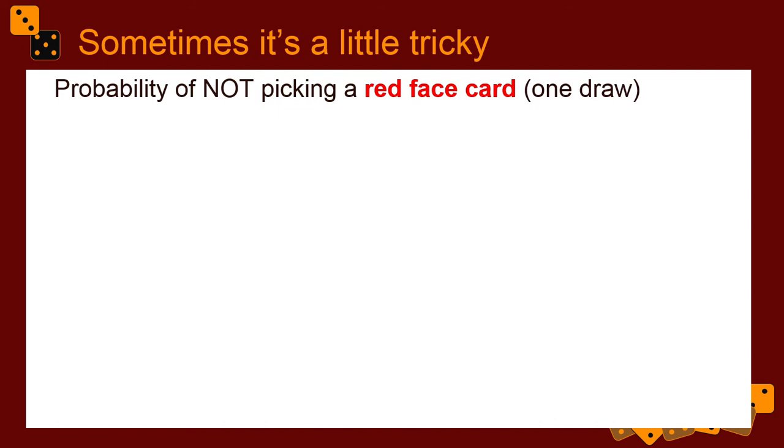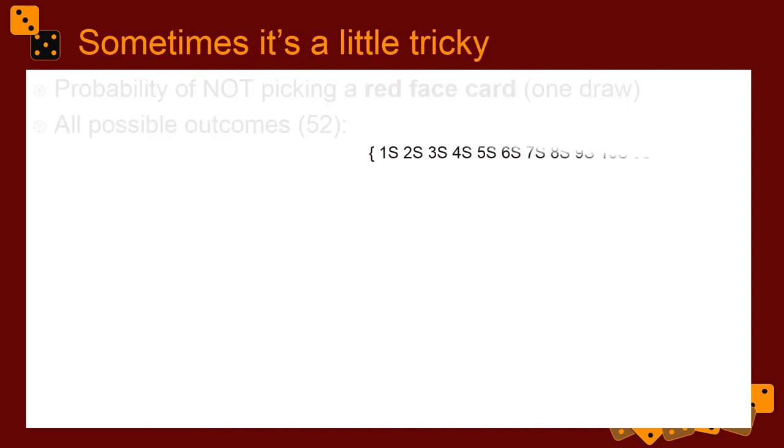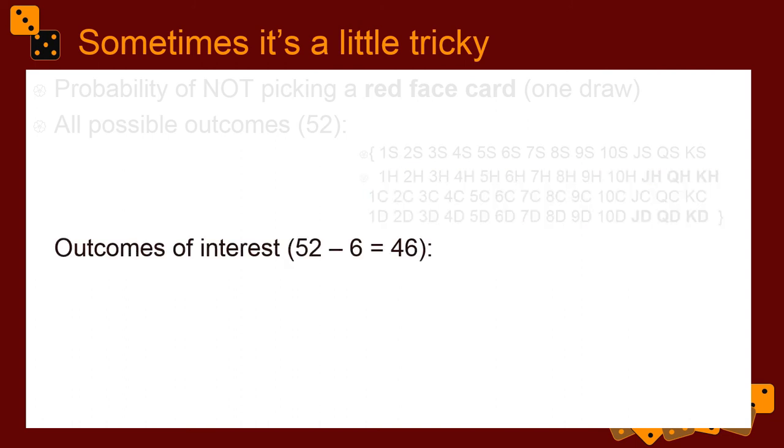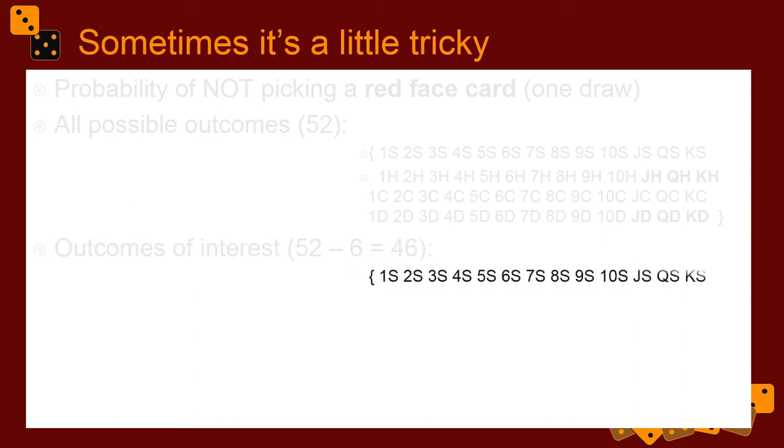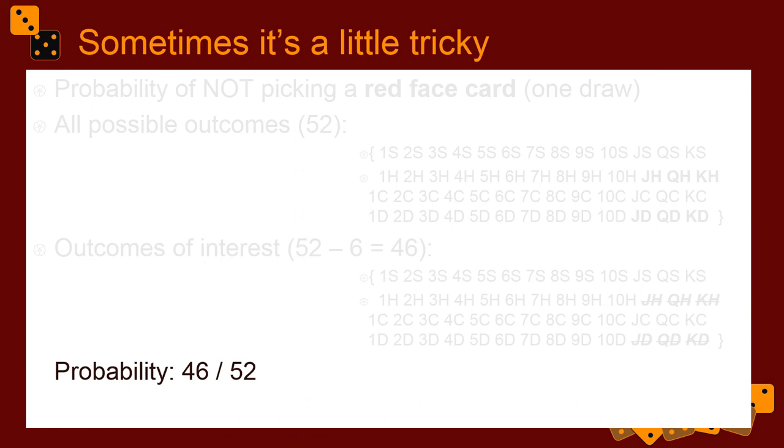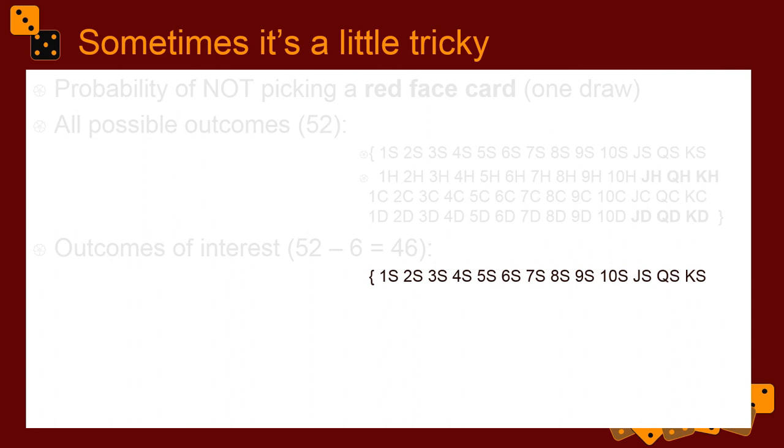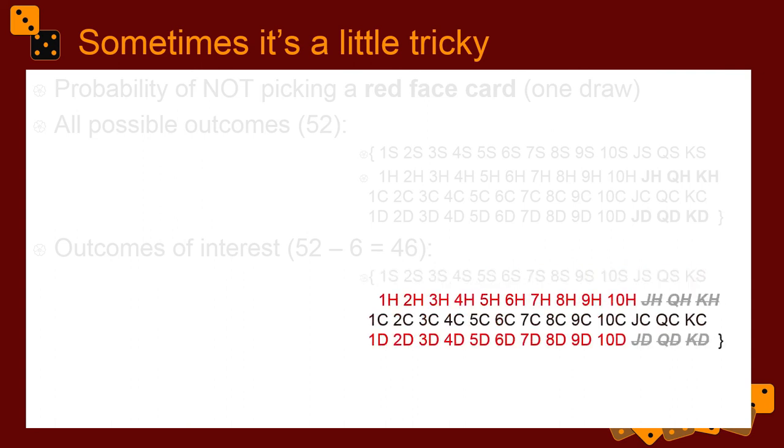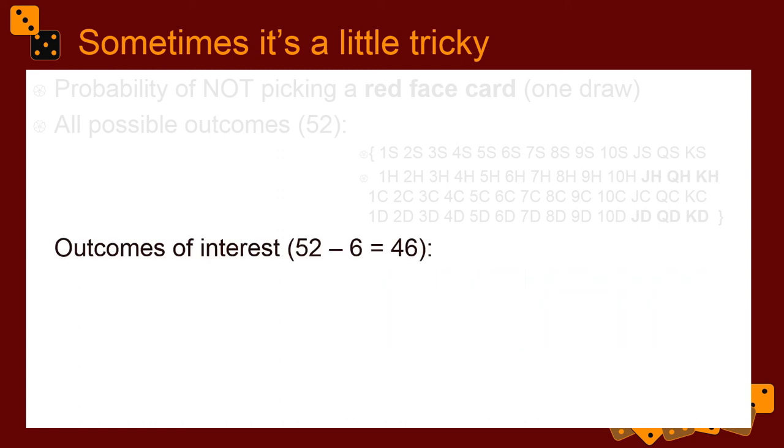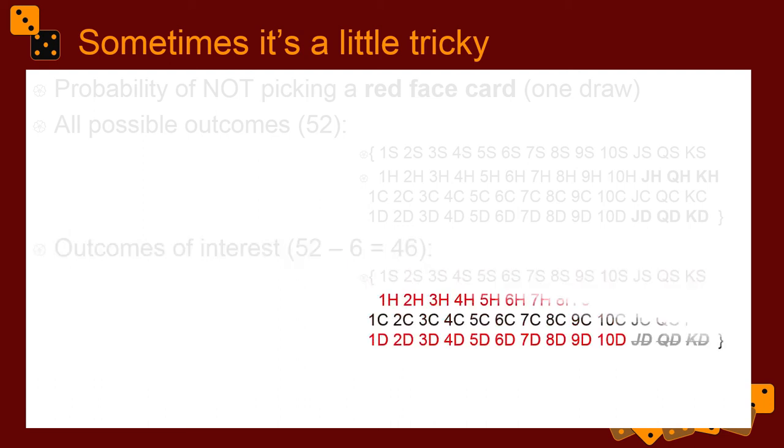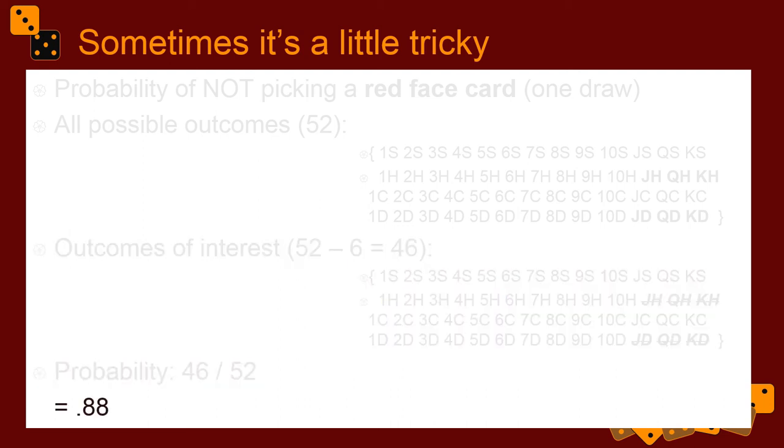So sometimes things get slightly tricky. What's the probability of not picking a red face card in one draw of one card from a standard 52-card deck? So all the possible outcomes are here. Actually, it's got some odd formatting. Anyway, you can see them all there. The outcomes of interest are these. All the possibilities. You've got these. But you don't want the jack of hearts, queen of hearts, king of hearts. Or the jack of diamonds, queen of diamonds, king of diamonds. So those are the three things you don't want in each suit. Two suits. So there are six cards you don't want that you're not interested. So the outcomes of interest, then, are 46 potential outcomes of interest. And so, 46 divided by 52 is 0.88.